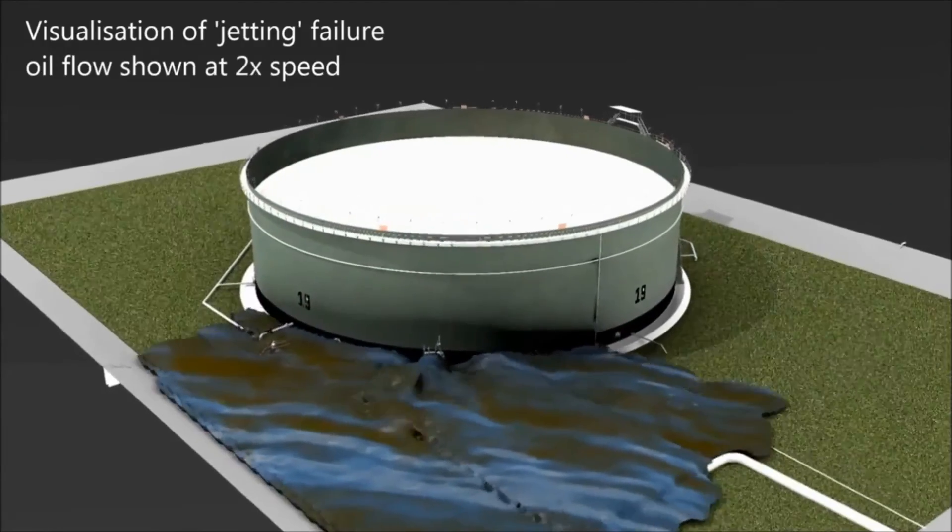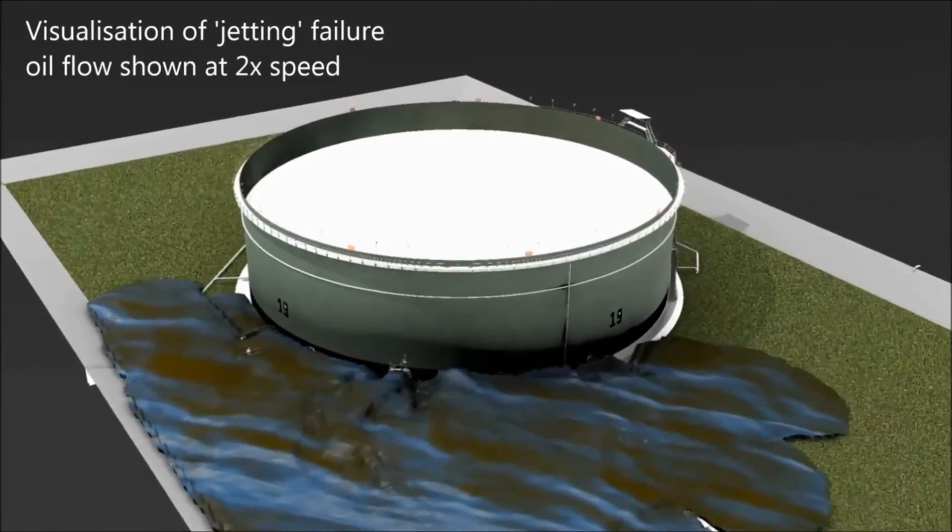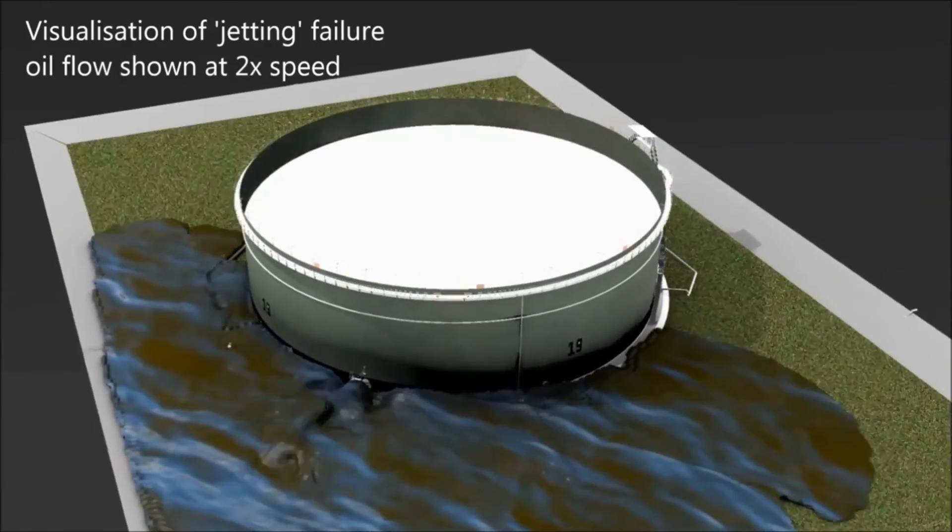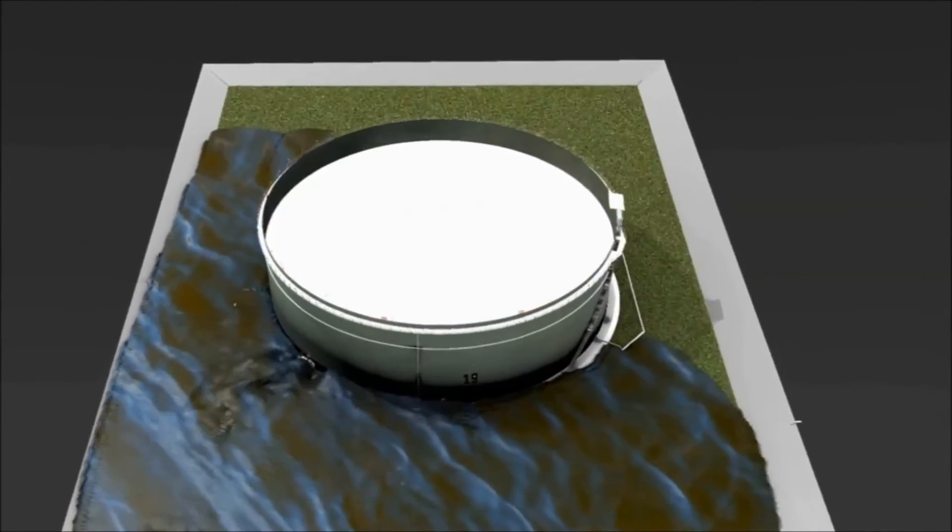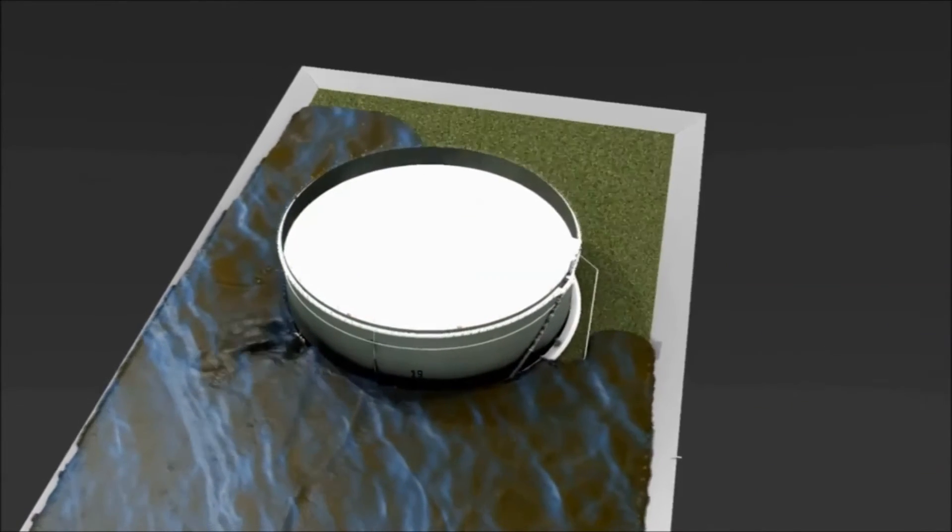Whilst the probability of a catastrophic failure of the storage tank is low, such incidents do occur. Failure can be the result of a damaged pipe or valve connection or even partial removal of a small section of tank wall.